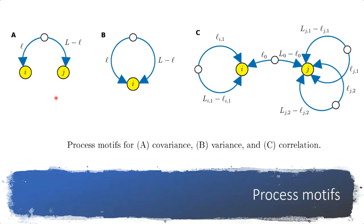What this tells us is that statistical dependence between two variables can indicate a direct causal relationship between them, or it can indicate a third variable that has a causal relationship with both — which is very intuitive. Process motifs for variance come from the diagonal elements of the covariance matrix. Process motifs for correlation look more complicated but are made up of a covariance process motif in the middle and some number of variance process motifs at node j.